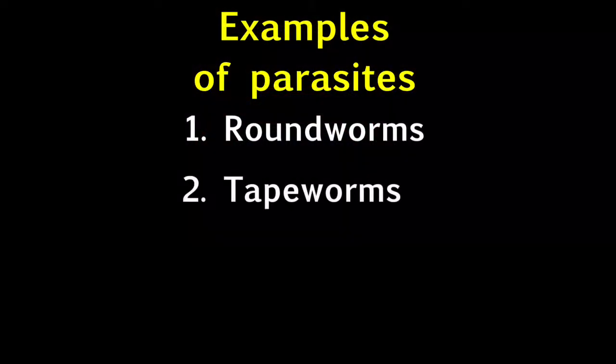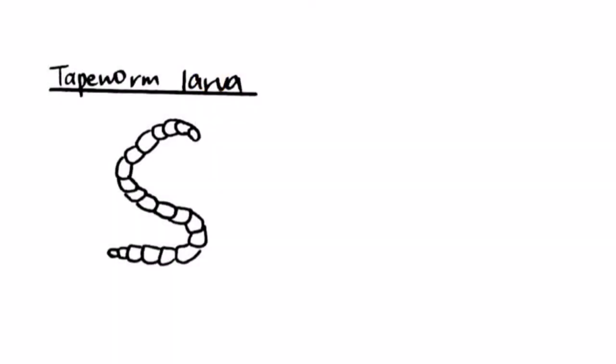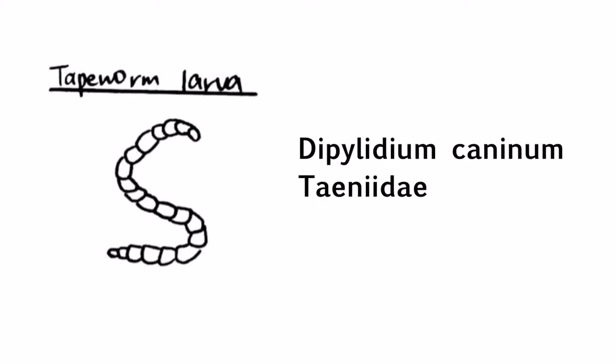Secondly, for tapeworms, this is the structure of its larva. The two common kinds are Dipylidium caninum and Taeniidae, which can both be found in cats and dogs.